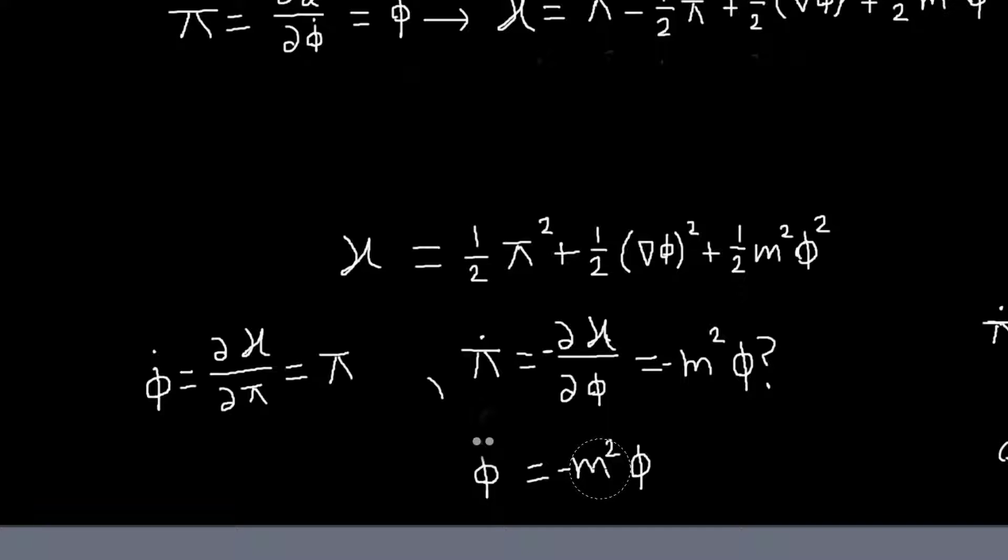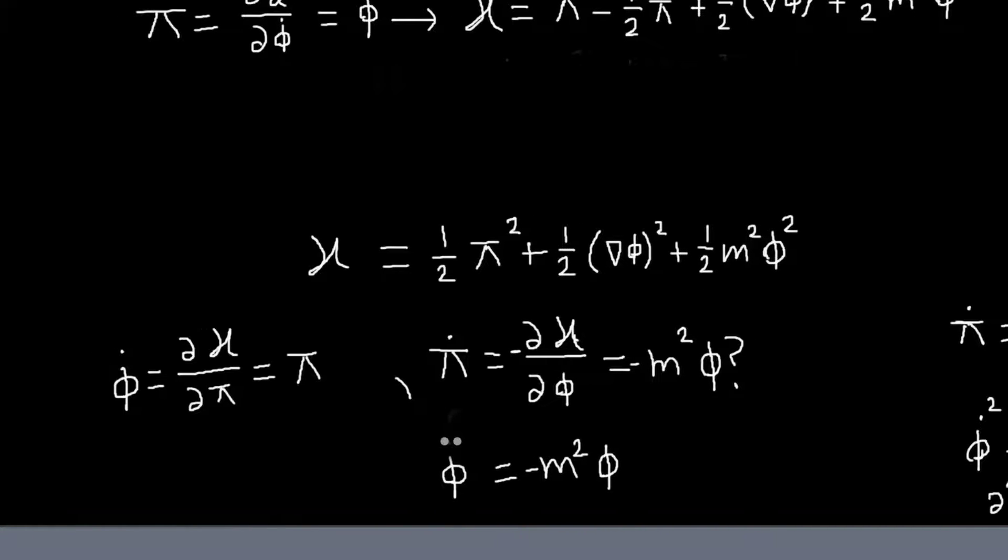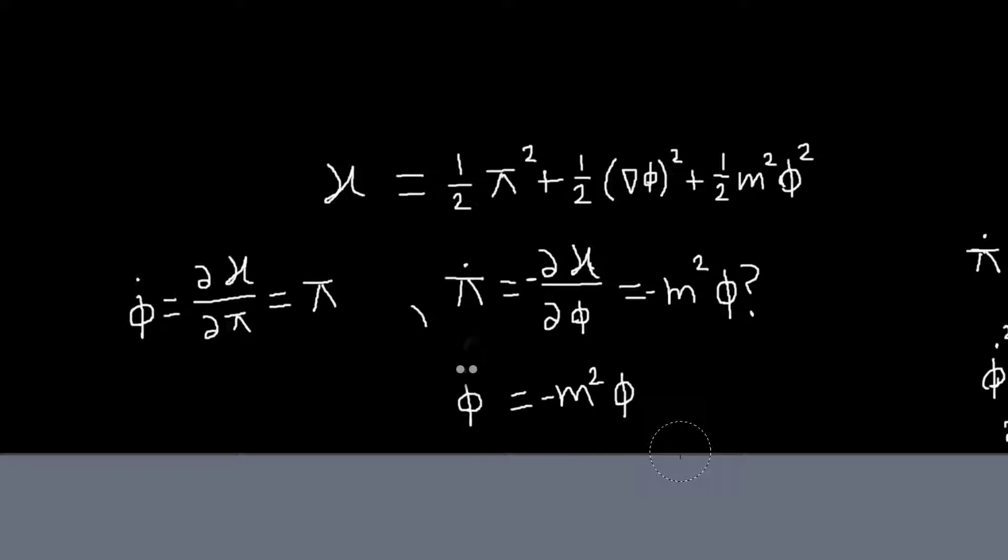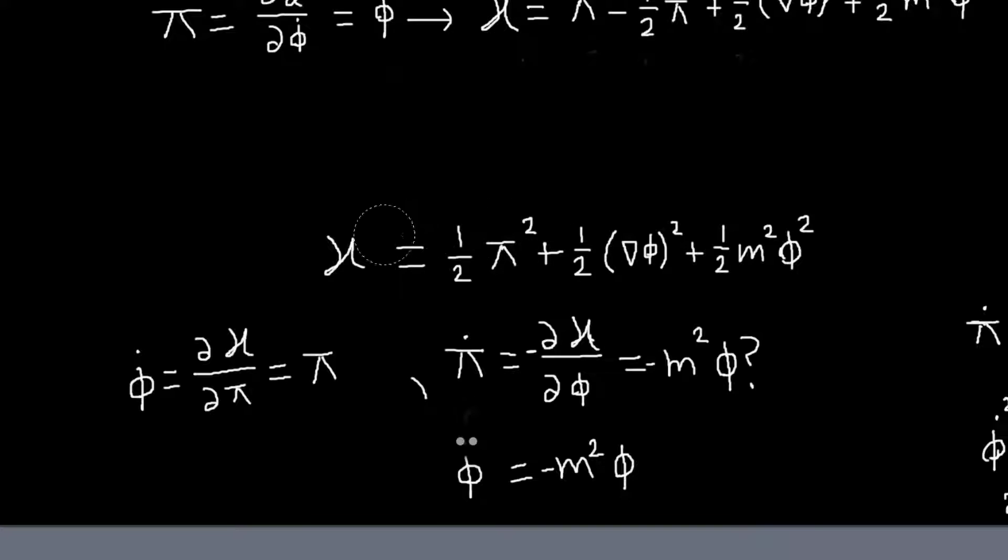So the issue is that when we're working with the Hamiltonian formulation, the conjugate momentum field and phi are independent things, but the derivative of the field with respect to the coordinates, these gradient terms, they are no longer independent of the field. So we need to take the derivative of these, the derivative of this term with respect to phi.